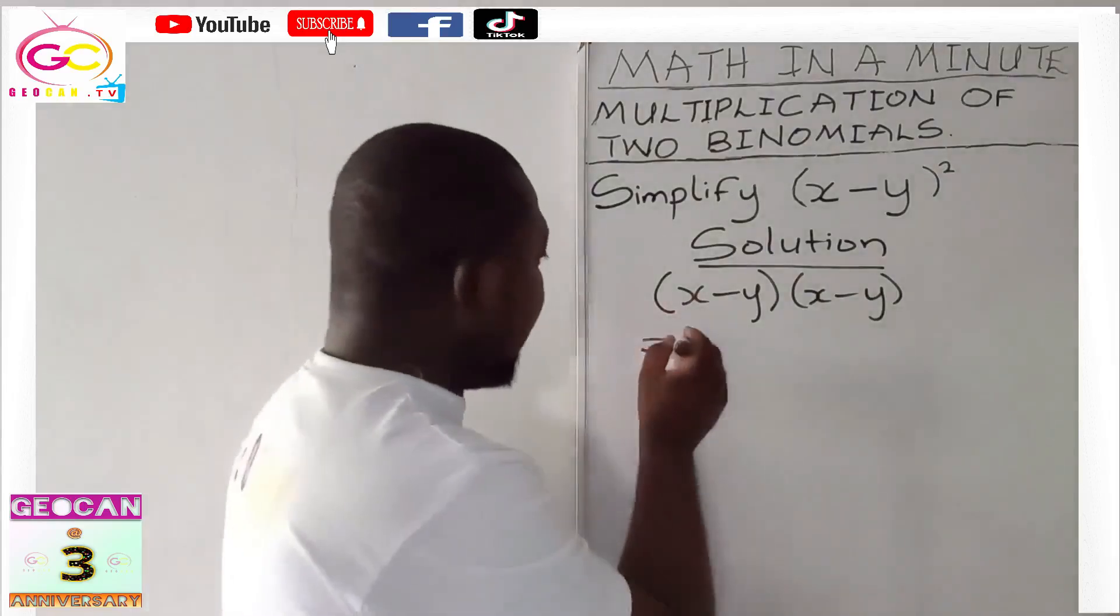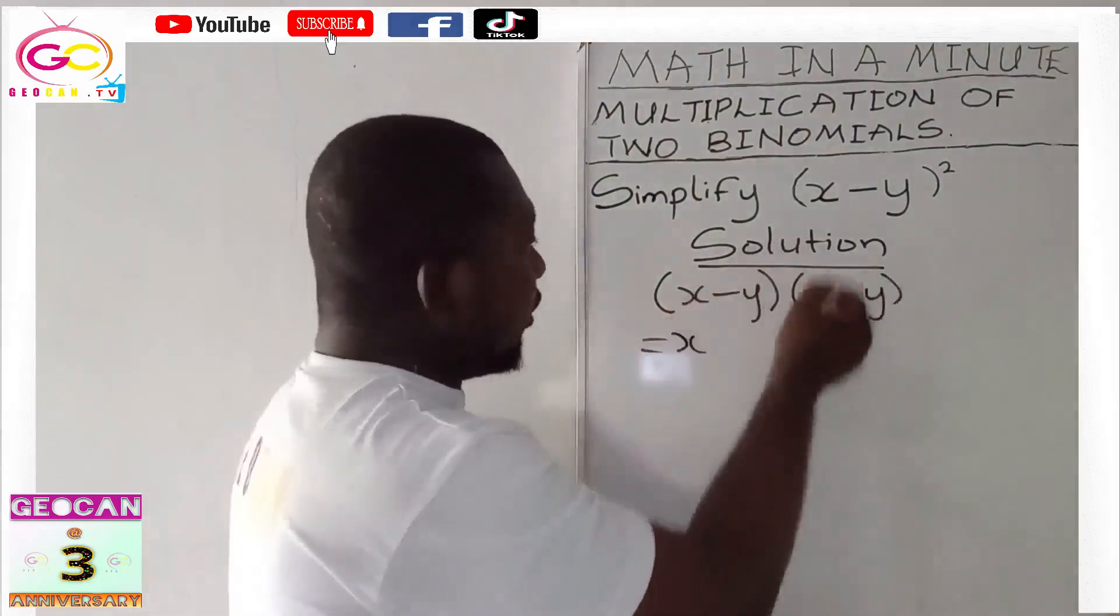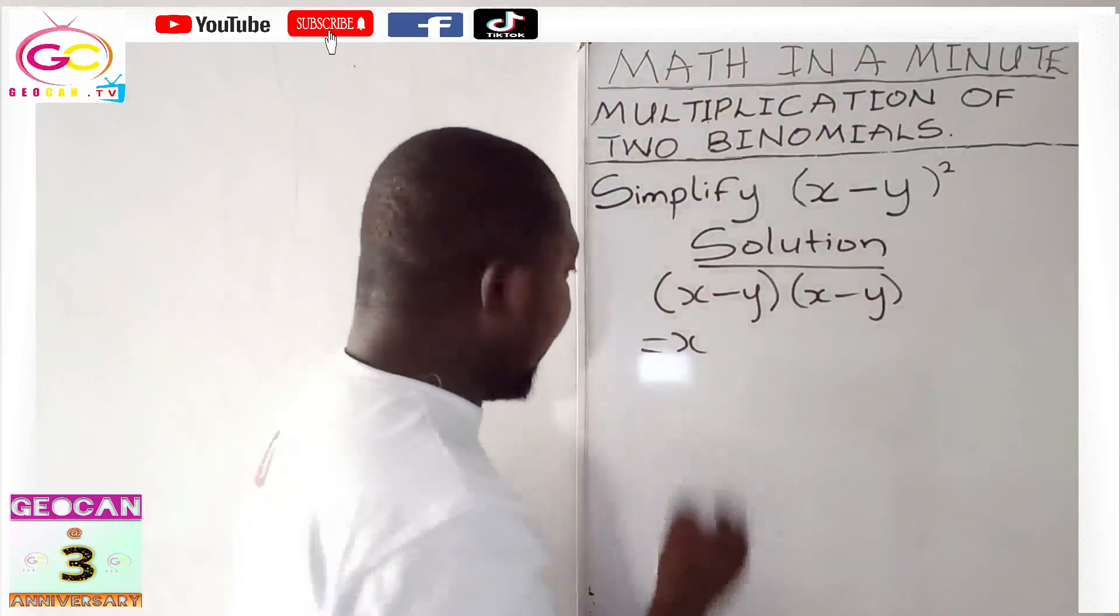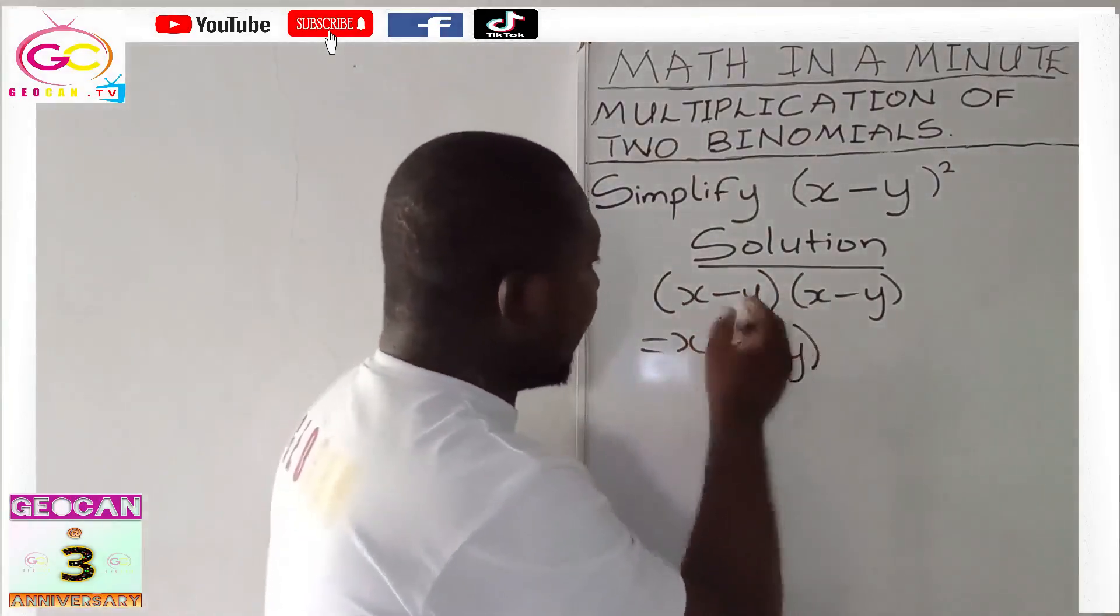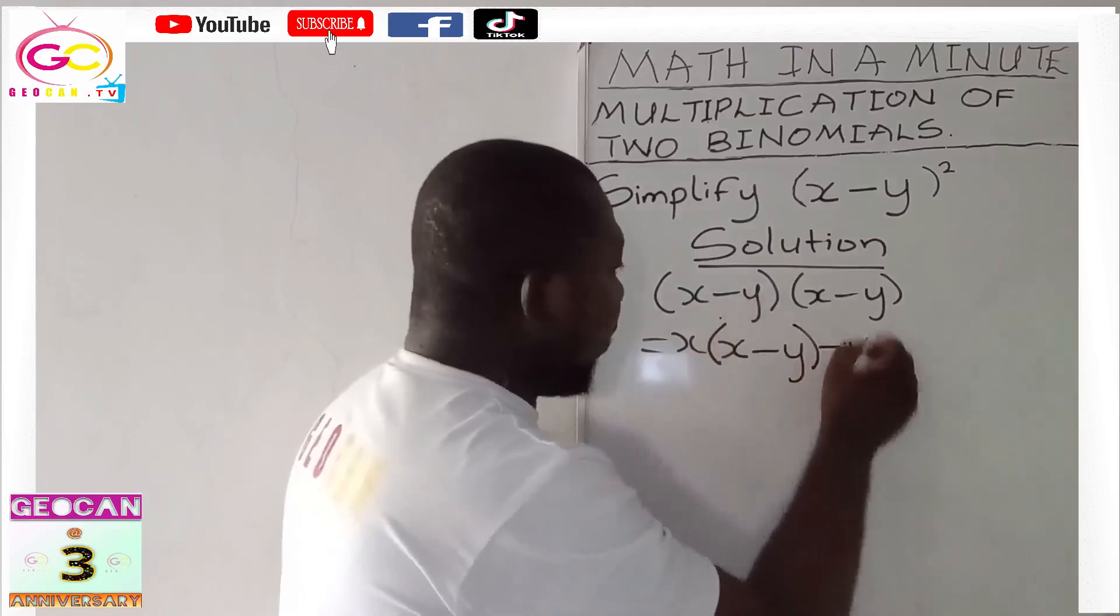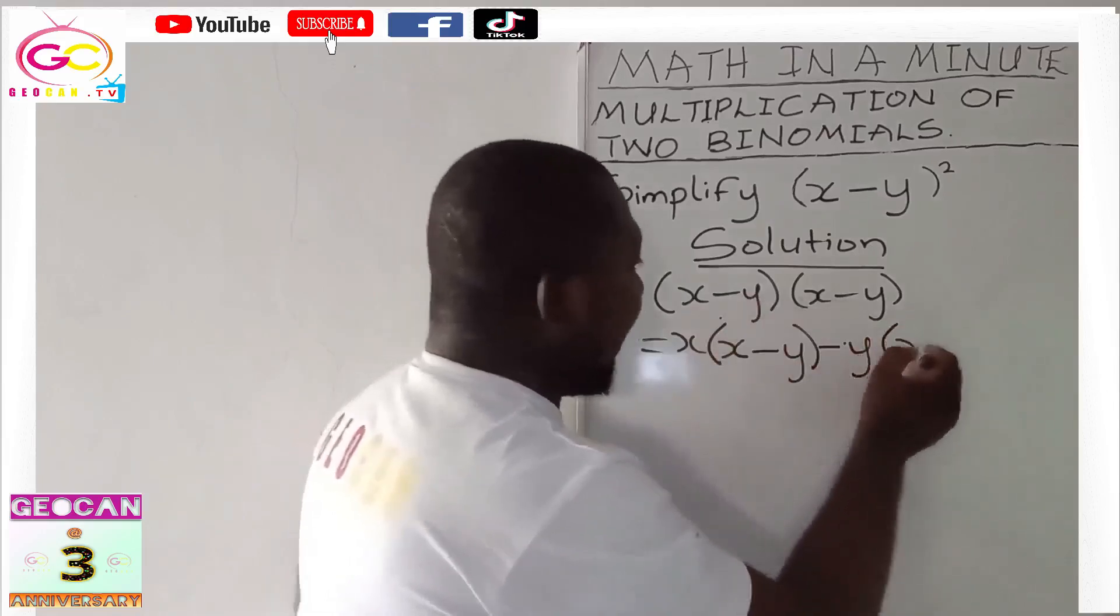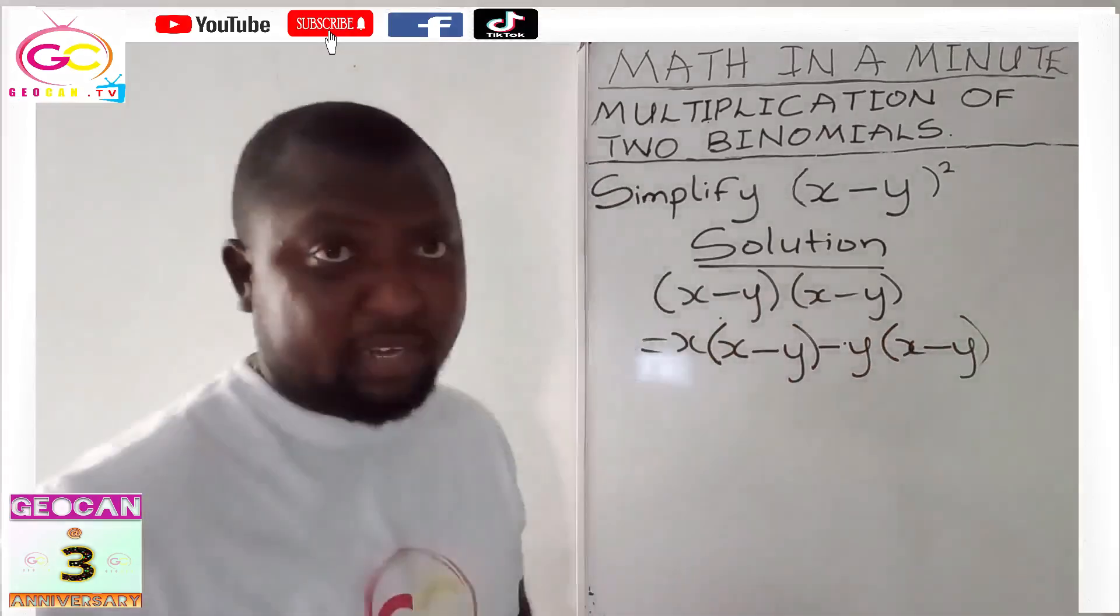Now let's apply the rules of algebra. Any term here is multiplying everything in the other brackets. So it's x(x - y) minus y(x - y). I'll give you an understanding.